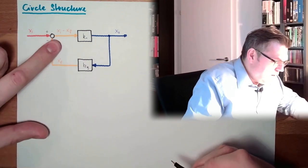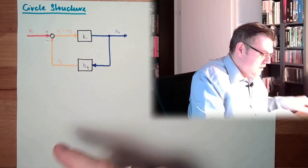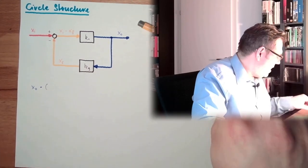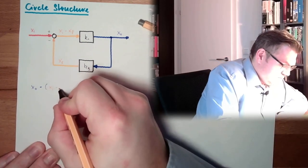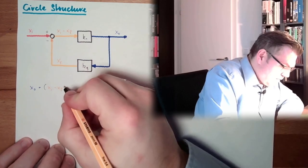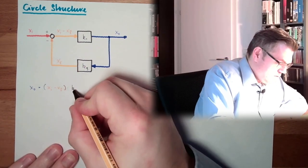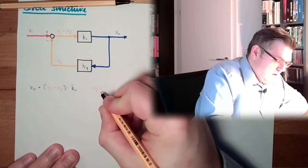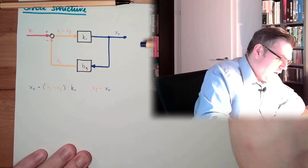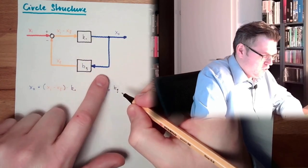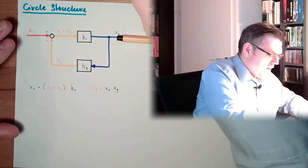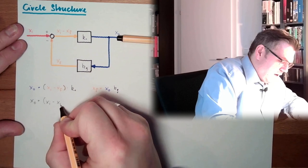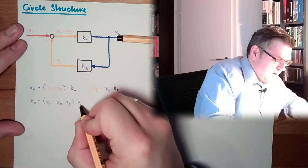If we have a look at this, we have here XO equals XO. And then we have Xi minus XF multiplied by K1. This is this part. And this XF equals XO multiplied by KG. This is this part. And this I will use here. So XO equals XI minus XO multiplied by KG multiplied by K1.